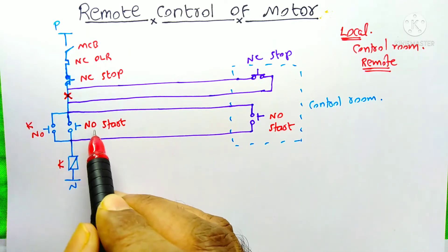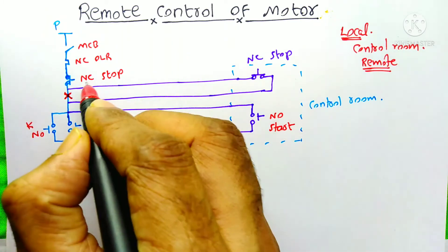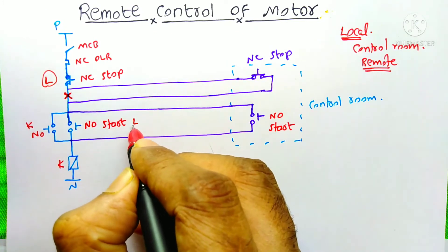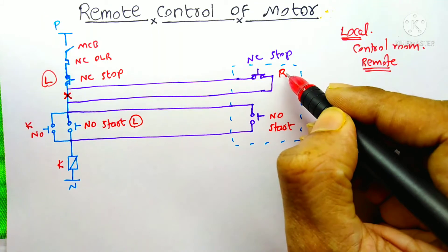Then on the parallel of this NO start push button, I put another start push button on our control room. This NO stop push button is the local. This one is also local. NC stop push button is remote control. So we can call it as remote R.